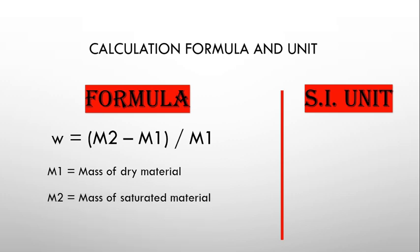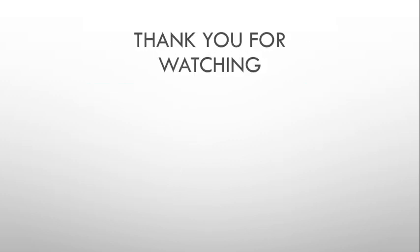m2 is the mass of the saturated material — that is, any material in a completely saturated state which has absorbed the maximum water it can absorb. As it is the ratio of masses, it is unitless, or we can say it is a constant. That concludes the topic of water absorption as a physical property of material. Thank you for watching.